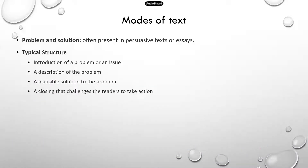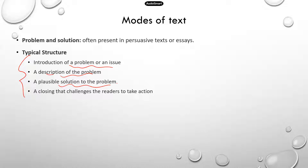Now problem and solution. There's an existing problem and what we can do to resolve it. Usually the author follows a typical structure: introduce the problem or issue first, describe in detail what the problem is about, present a possible solution, and sometimes challenge the readers to take action. Though there might be some variations.